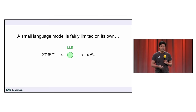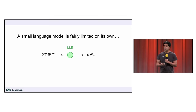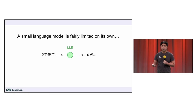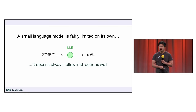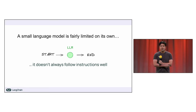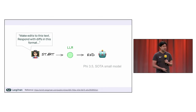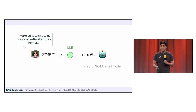A small language model, if you've ever tried it out, can be a little bit limited on its own — especially compared to frontier models like the bigger Gemini models, OpenAI, or Anthropic. They don't follow instructions as well all the time. As an example, I asked Phi 3.5, which is one of the state-of-the-art small models currently out by Microsoft.